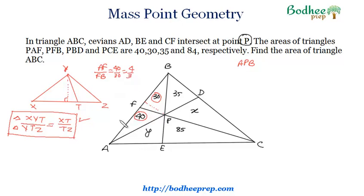So AF will be 4 and FB will be 3. So this is how we are moving towards those information which we use in mass point geometry. So we have got one ratio, that is AF and FB is 4 is to 3.